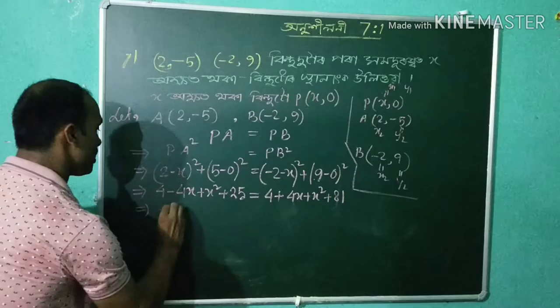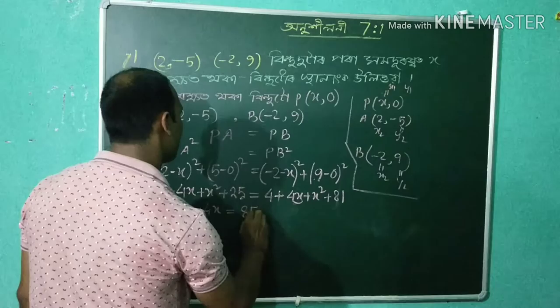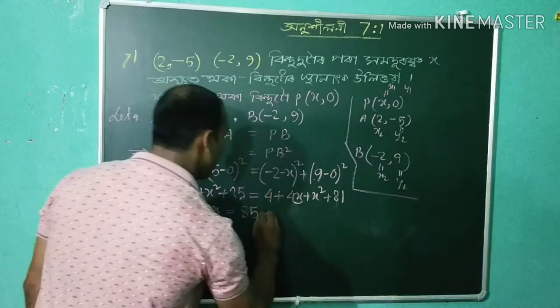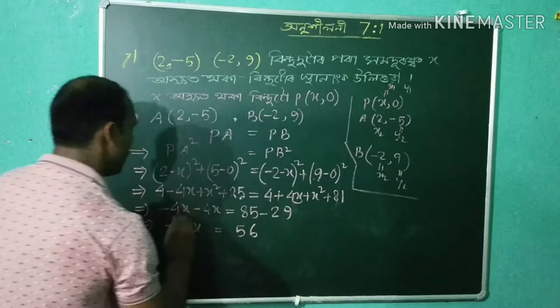Now combining like terms: we get x squared cancelling, minus 4x and plus 4x cancelling, giving us 4 plus 25 equals 29 on one side and 81 on the other, so minus 8x is equal to 56.